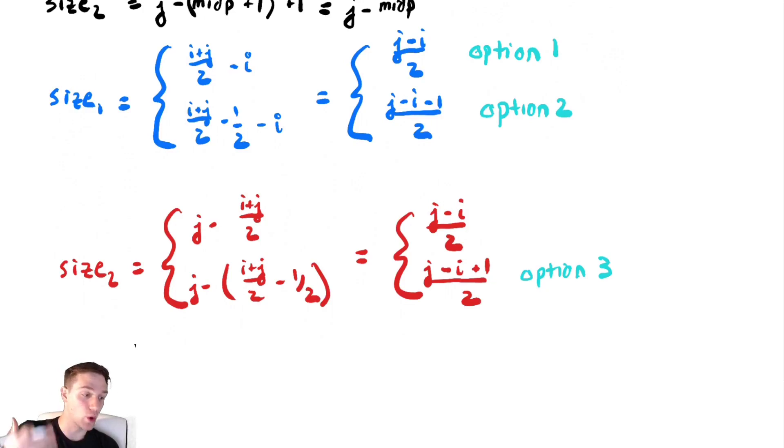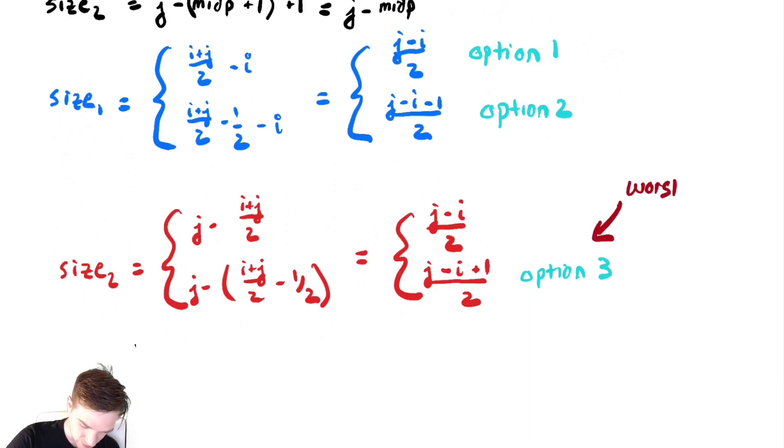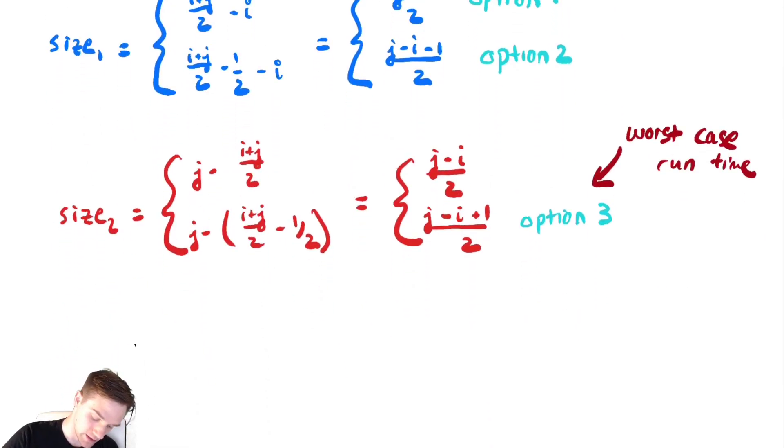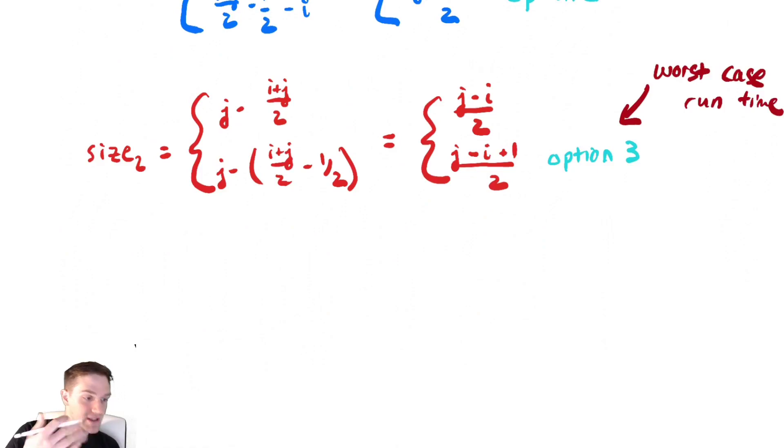Remember, I said we're going to look for the worst case running time. So we want to identify which one of these options for the sizes of a recursive call is the largest. We have j minus i, j minus i minus 1, that's smaller than the first option, and then j minus i plus 1. The worst case runtime option is this one down here, option 3. And something else convenient happens with option 3. j minus i plus 1 should look really familiar from the start of the problem where we said that is exactly what we defined n to be. So, the worst case size of a recursive call would be n over 2.